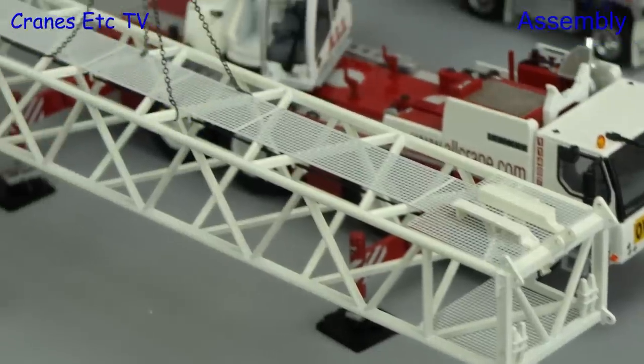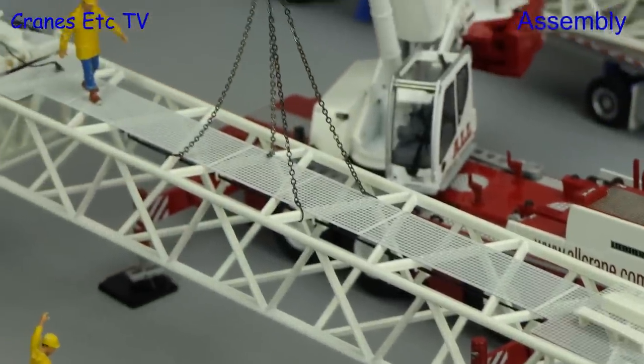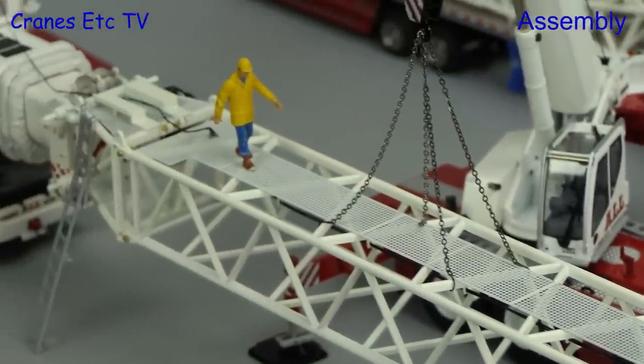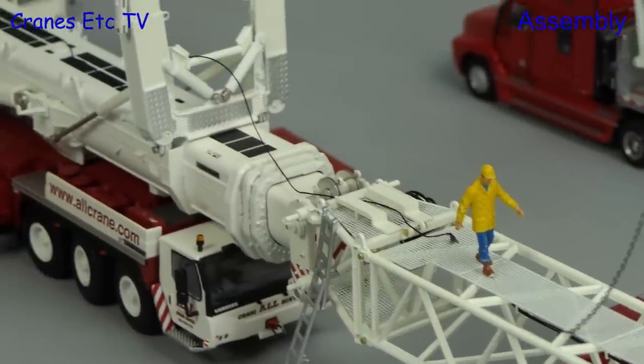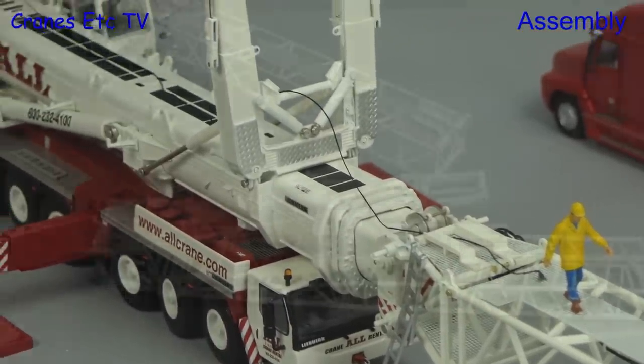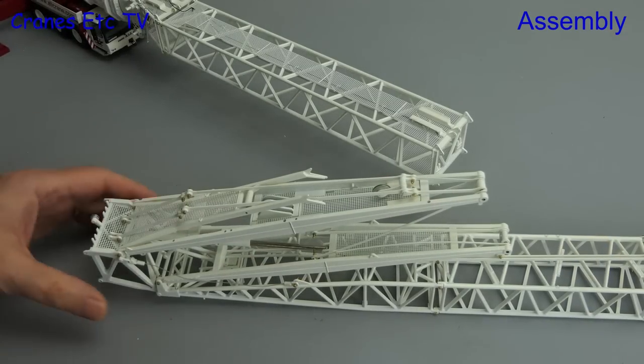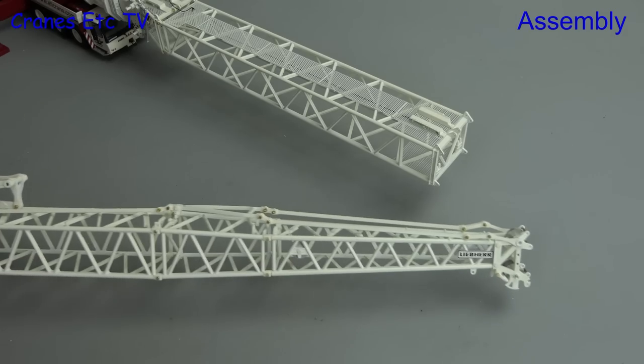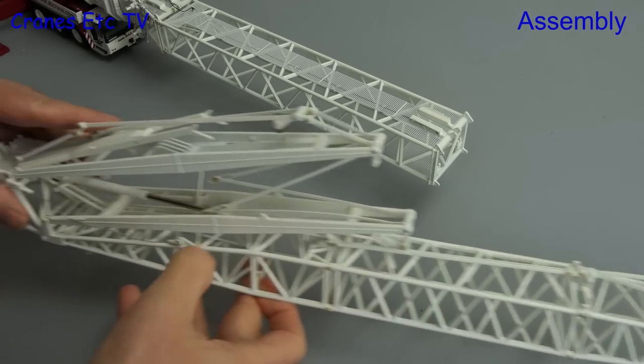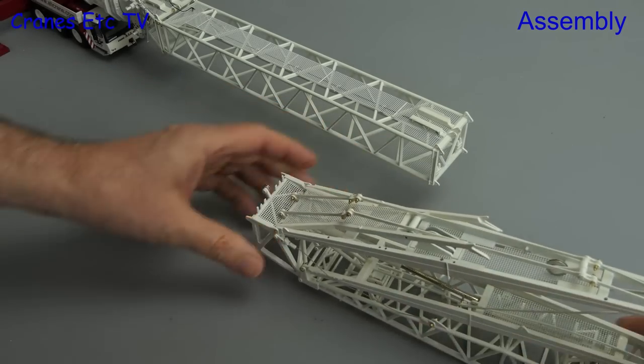One thing that this kit lets you do is form some mini dioramas so you can display the crane being assembled on site. Here we're in the process of setting up a luffing fly jib. We've attached the telescopic boom extension and here you can see a pre-assembled luffing fly jib. And in fact before we complete the assembly I will add in another intermediate jib section.